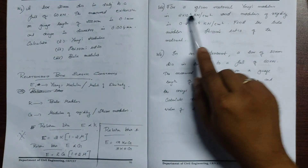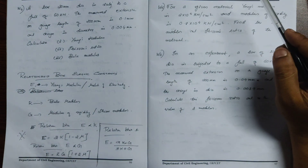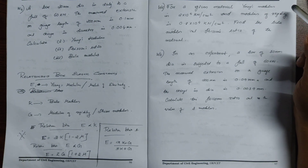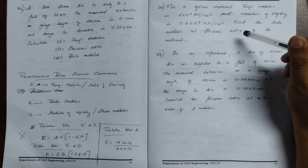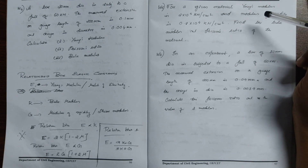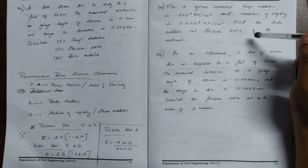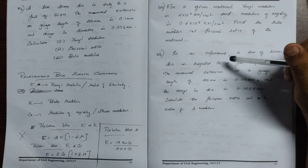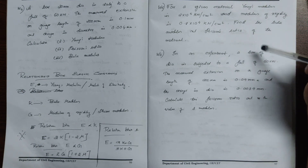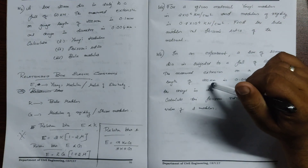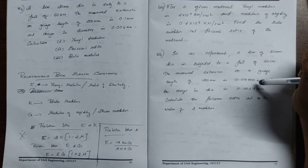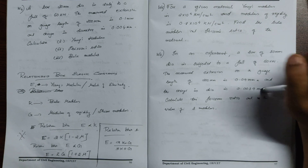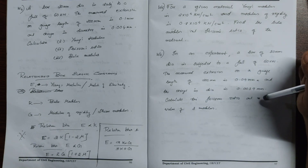For a given material, Young's modulus E is 0.8 times 10 to the power 4. In an experiment, a bar of 30 mm diameter is subjected to a pull of 60 kilonewtons. The measured extension on a gauge length of 200 mm is 0.09 mm, and the change in diameter delta d is 0.0039 mm. Calculate Poisson's ratio and the values of the three moduli: modulus of elasticity, modulus of rigidity, and bulk modulus.